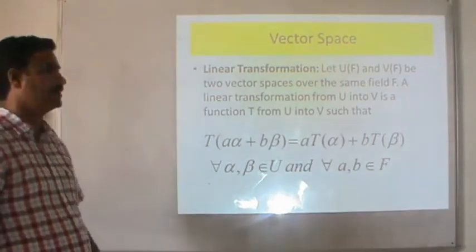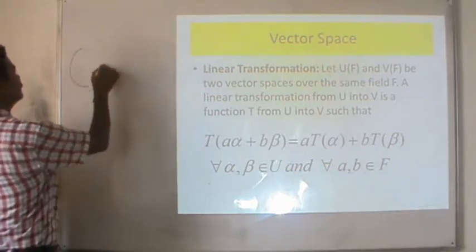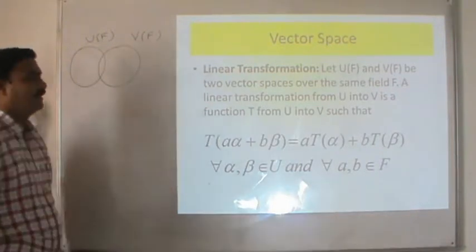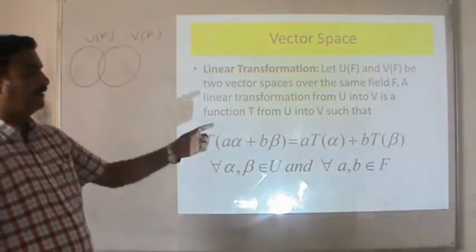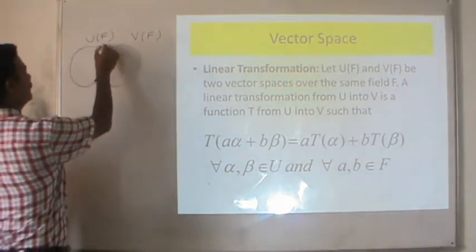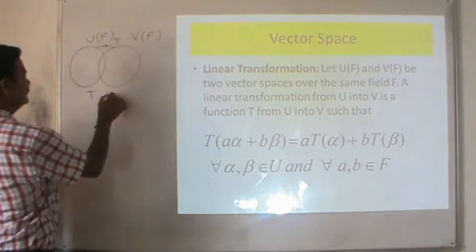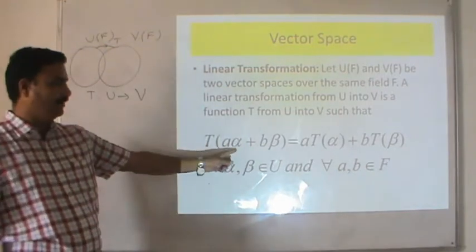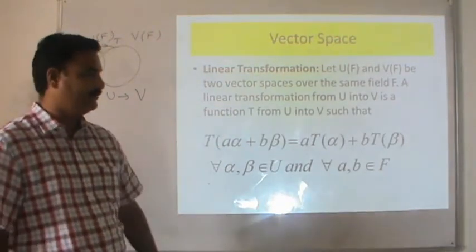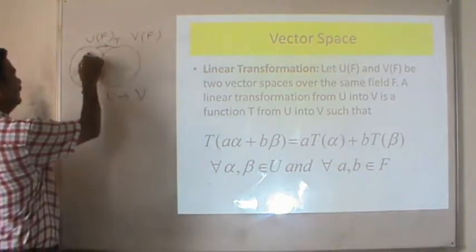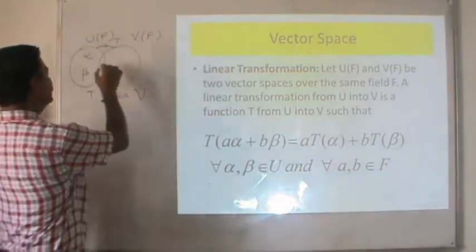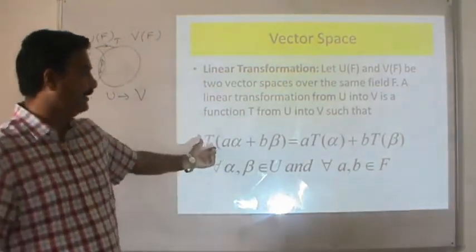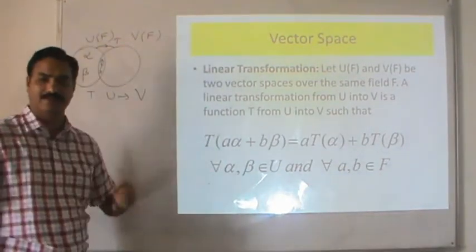This is the definition of linear transformation. Let us consider two vector spaces, Uf and Vf, over the same field F. A mapping or function T from U to V is a linear transformation such that T(aα + bβ) = aT(α) + bT(β) for every α and β belonging to U and any two scalars a and b belonging to F. Any function which possesses this property is called a linear transformation from vector space Uf to vector space Vf.